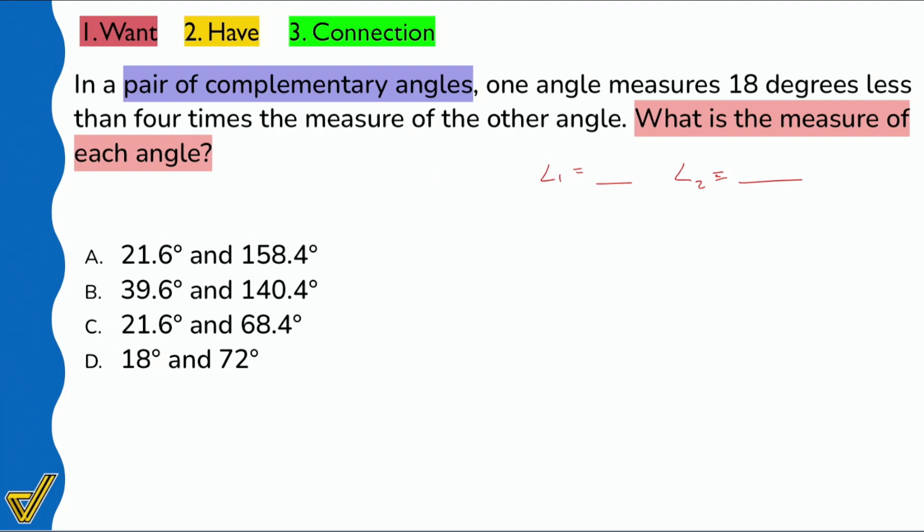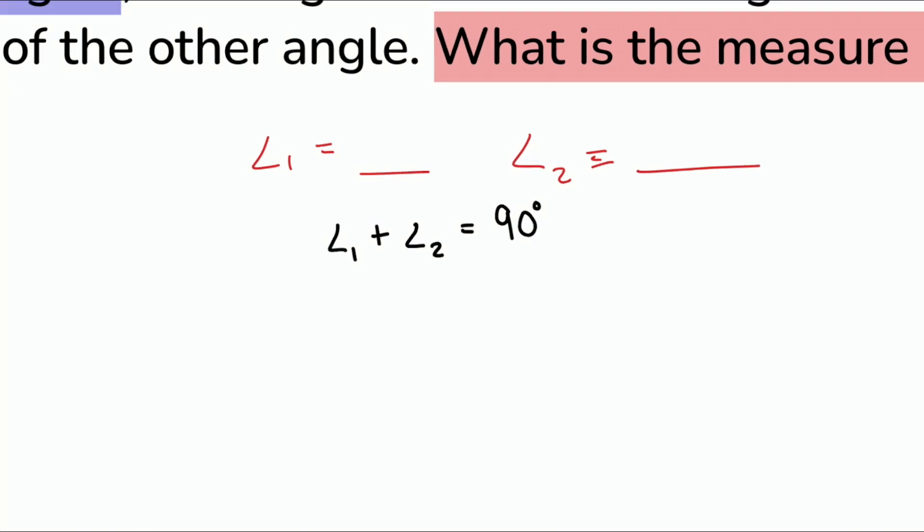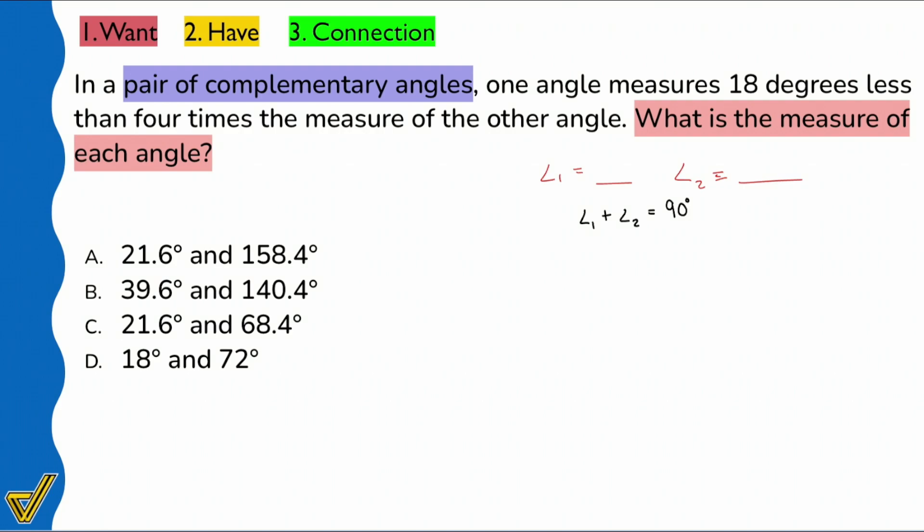So right over here, I'm going to zoom on in and I'm going to write this fact down. Angle one plus angle two, that's going to equal 90 degrees. So I'm just writing down the clues that I have. Just writing down the clues that I have, and I'm going to continue on here.